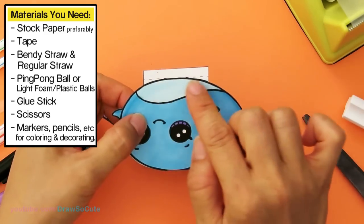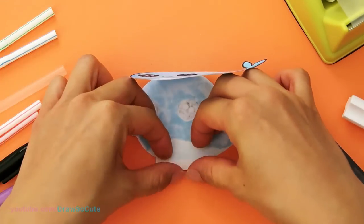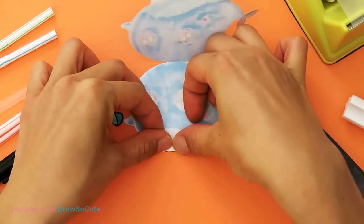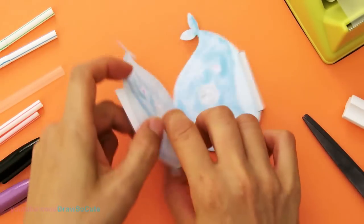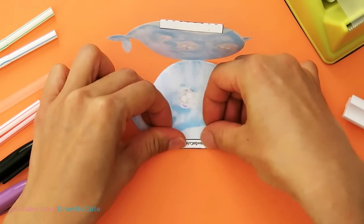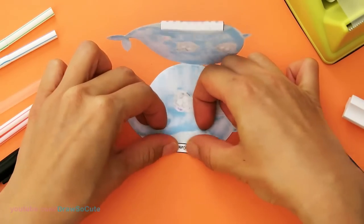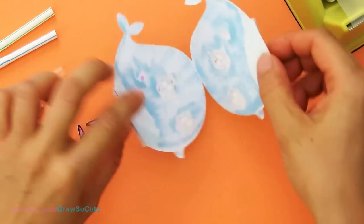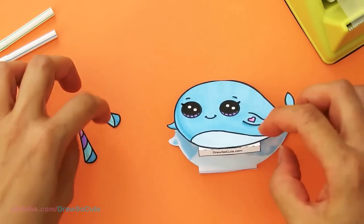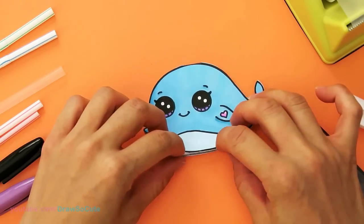So the dotted lines right here is just to tell me where I should fold. So just go ahead and fold straight. And same thing on the other side. So that's basically it for this piece right here. And the horns will go in later after we've put in the straw.